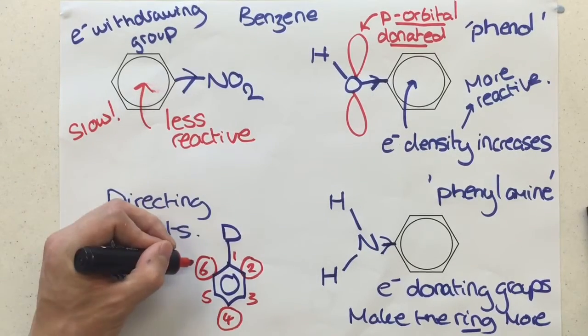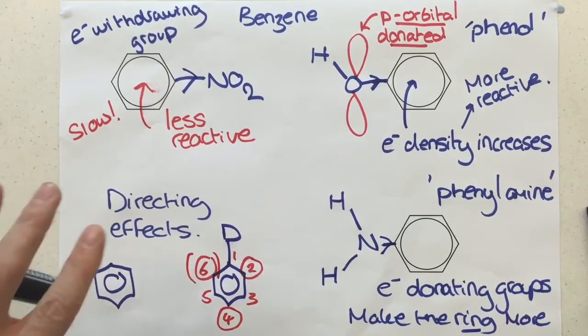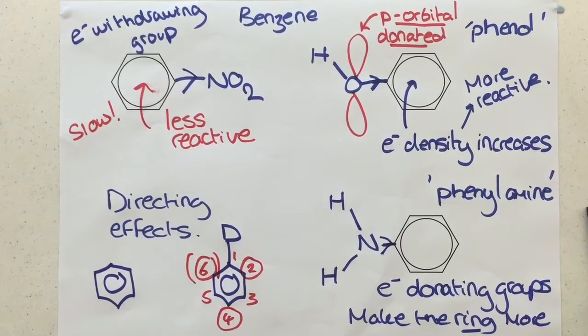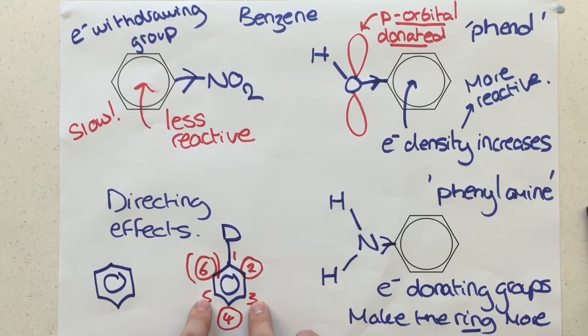Now, it would, of course, push to six as well, but that's kind of in brackets, because, of course, the six is just a two, but counted in the other direction. Positions three and five are not where the new groups would go if there was a donating group already on the benzene ring.